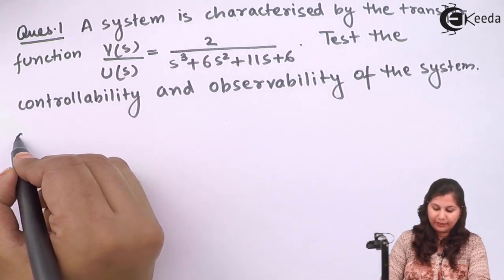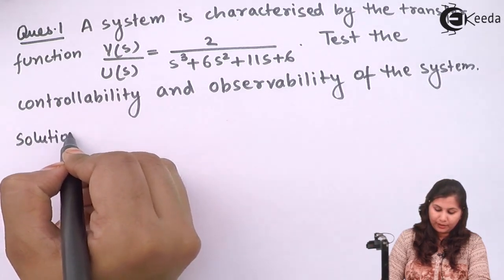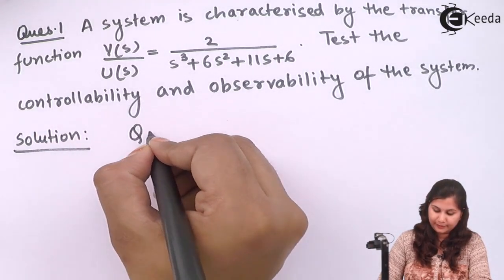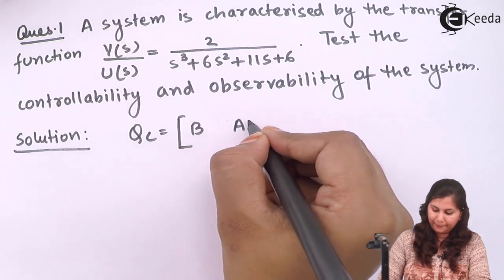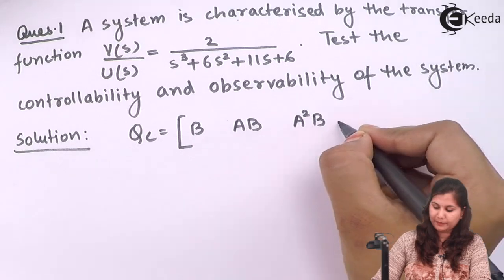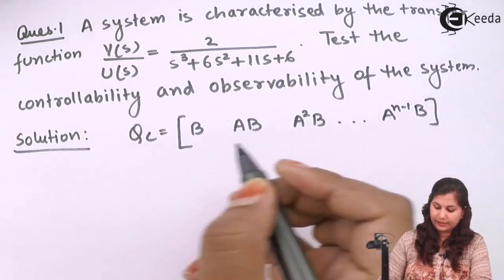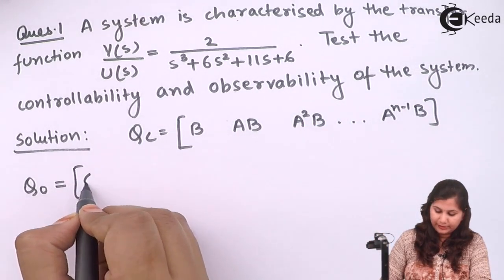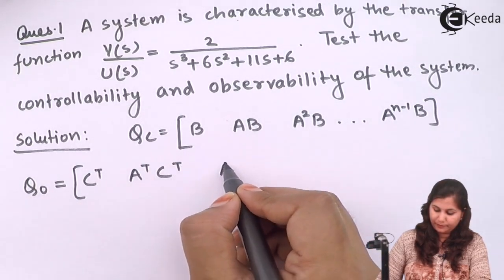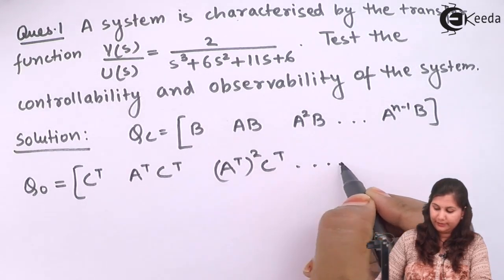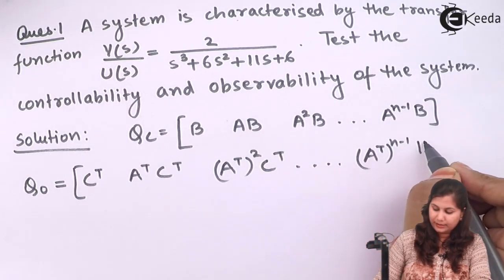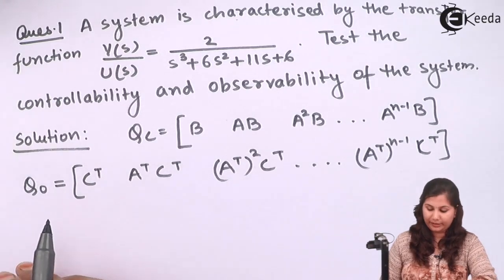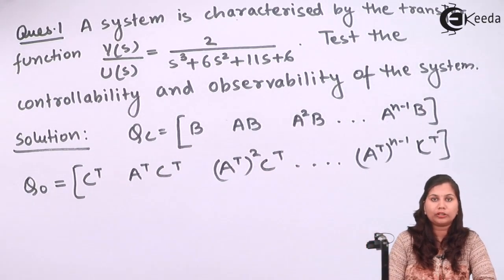To check the controllability and observability, we have the matrices Q0 and QC. QC is the controllability test matrix, given by [B, AB, A²B, ..., A^(n-1)B]. The observability test matrix Q0 is [C^T, A^T·C^T, (A^T)²·C^T, ..., (A^T)^(n-1)·C^T]. The ABCD matrices of the state model are used in these expressions.